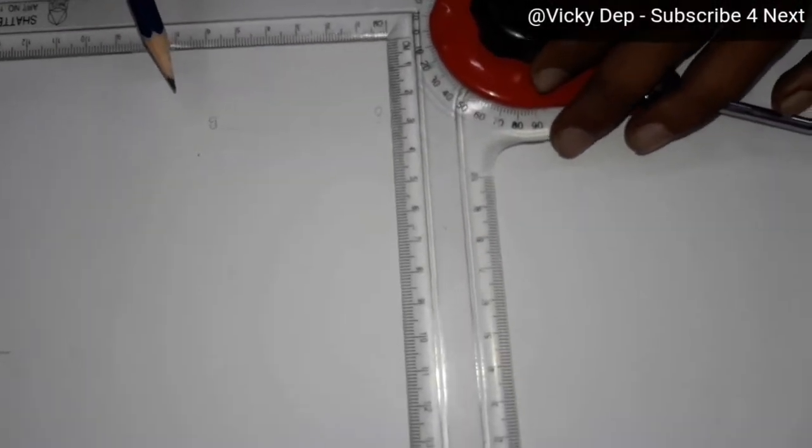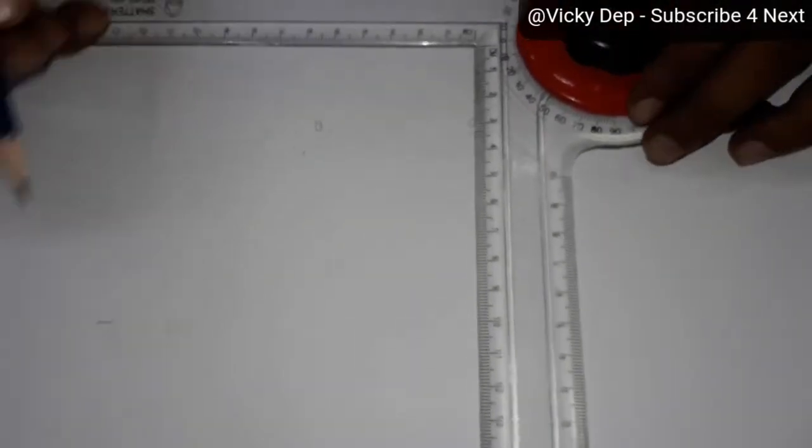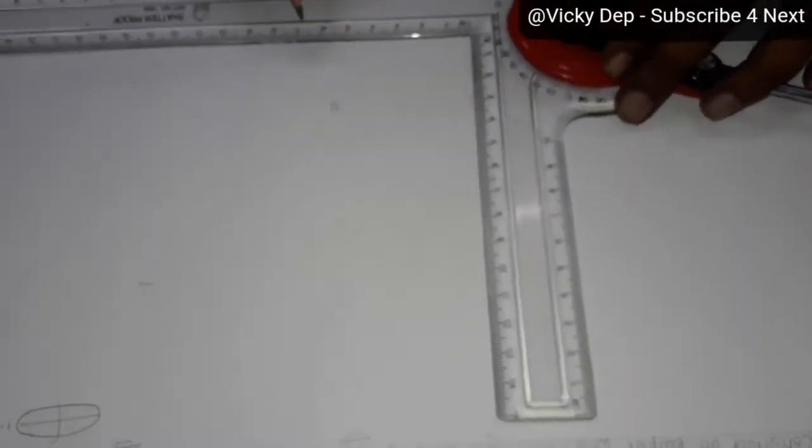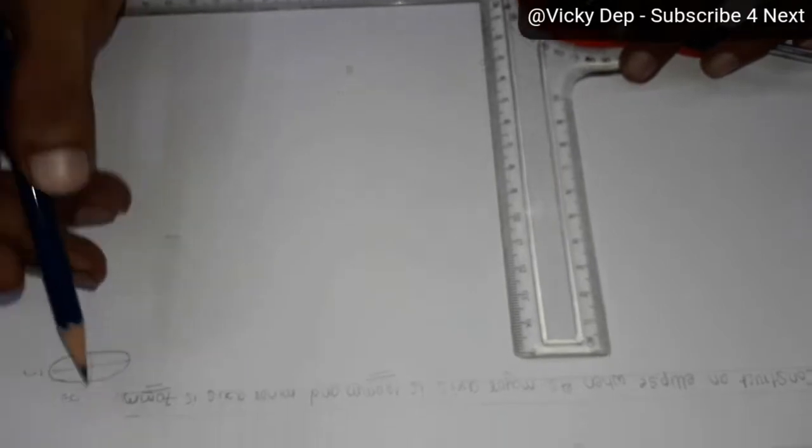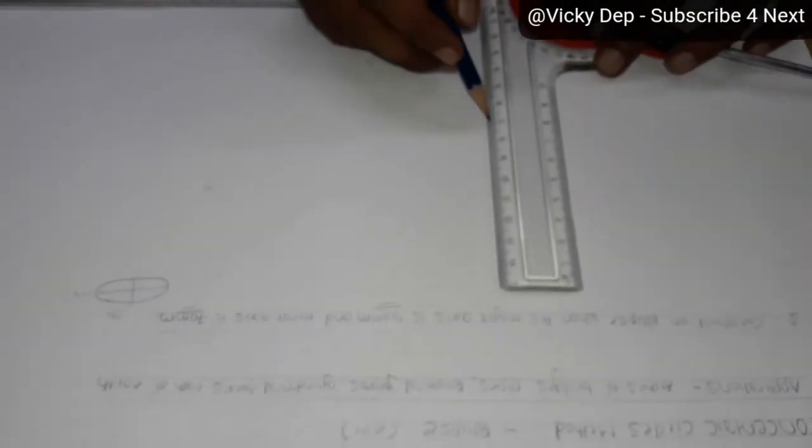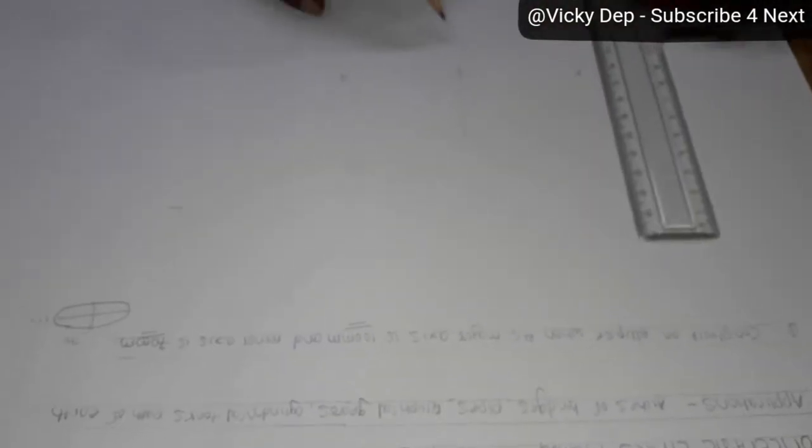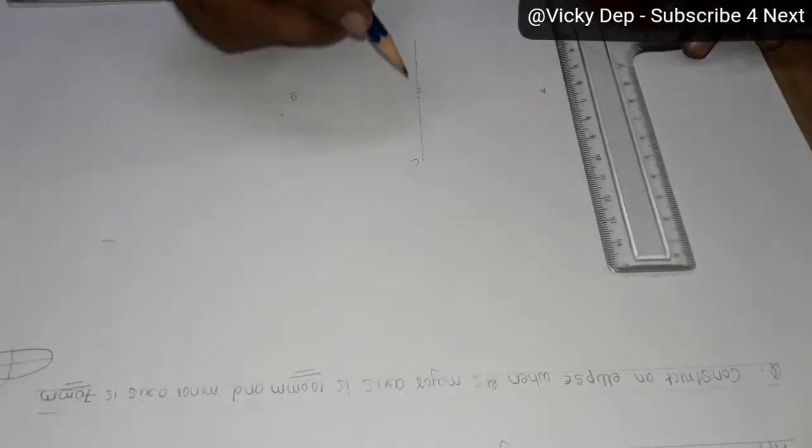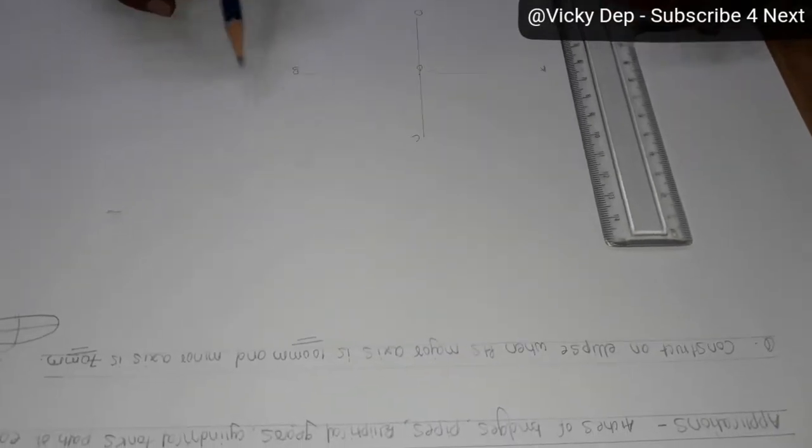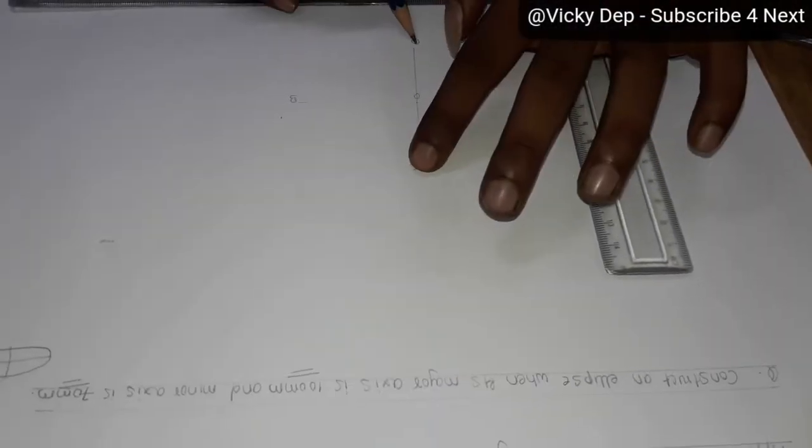Now you have to take another axis that is called as minor axis. That minor axis will come 70 mm. So 35 on the top, 35 on the bottom. So this is the minor axis. Give some name C, D. This is the major axis and this is the minor axis.